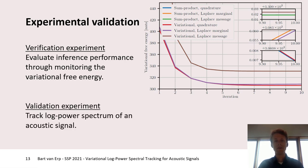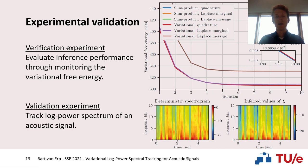As a validation experiment to judge whether variational log power spectral tracking is actually feasible, we track the log power spectrum of an acoustic signal. On the left spectrogram, we can see the deterministic spectrogram calculated using a short-time Fourier transform and then taking the logarithm of the squared magnitudes of the frequency coefficients. On the right, we can see the inferred values of our log power spectrum. The most important features are retained, though this comparison is not directly one-to-one, as psi represents a pseudo log power spectrum and we have modeled psi using a Gaussian prior, which differs from the deterministic spectrogram.